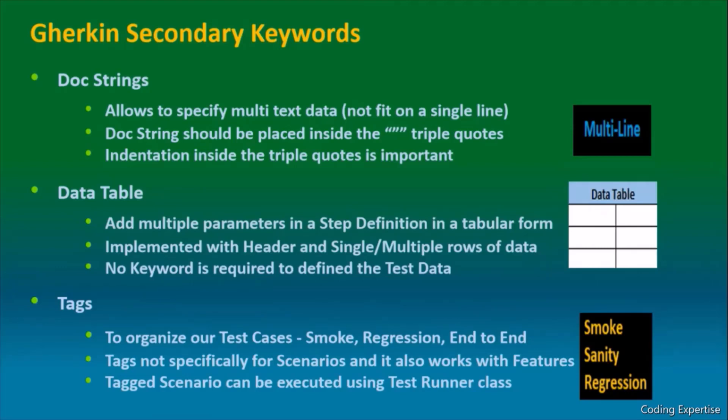In the last video, we talked about Gherkin primary keywords. Now let's learn Gherkin secondary keywords. Doc strings helps you specify multiple lines of data inside a feature file and it should be placed inside triple quotes. The indentation inside the triple quotes is very important. Let's see an example so I can make you understand better.